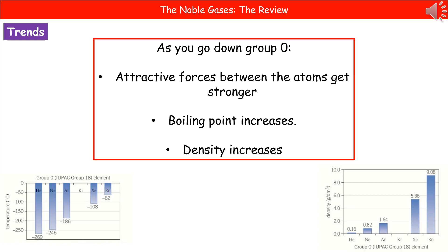Just like we've seen with the alkali metals and the halogens, one of the questions they could give you is to predict the missing part from a table of data or a graph. Remember what I've said previously — don't get careless and just write down something that's between the two numbers. Actually work out the differences and then apply that same difference to your missing value to make it accurate.